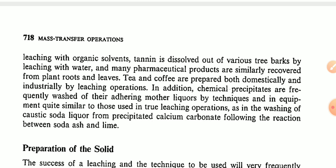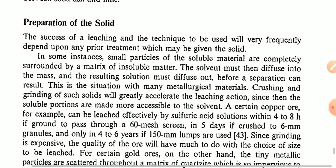are similarly recovered from plant roots and leaves. Tea and coffee are prepared both domestically and industrially by leaching operations. Chemical precipitates are frequently washed of their adhering mother liquor by techniques and equipment quite similar to those used in leaching operations — for example, in the washing of caustic soda required for precipitated calcium carbonate following the reaction between soda and lime.